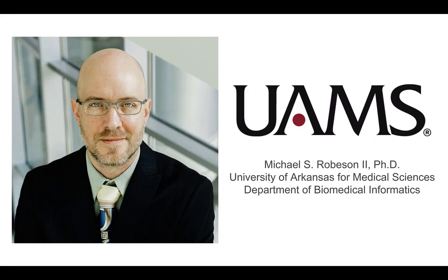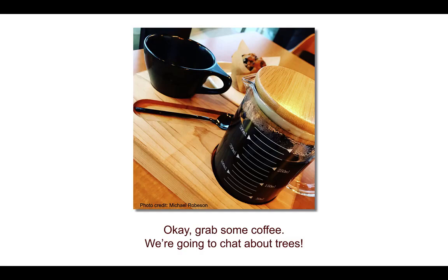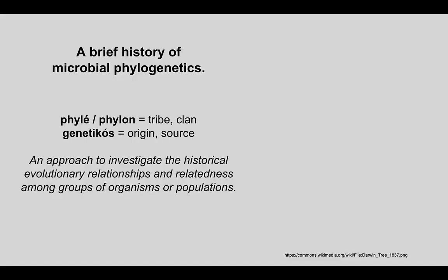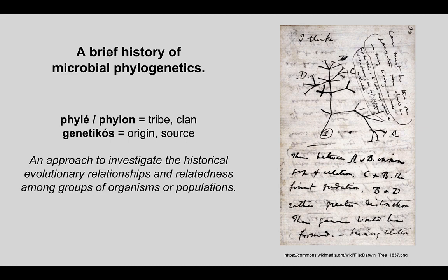So grab a cup of coffee or your favorite beverage and let's talk about trees. Many of you are aware of the famous drawing by Charles Darwin called 'I Think', where he came up with the concept of a branching structure of species over time — the variety of life as it goes extinct or diverges, creating new species. Hence the name of his book, Origin of Species. He was interested in how new taxa arrive over time.